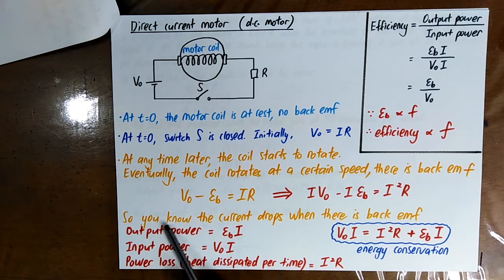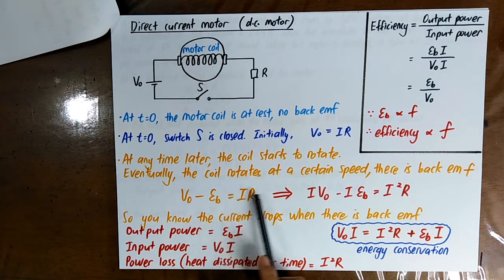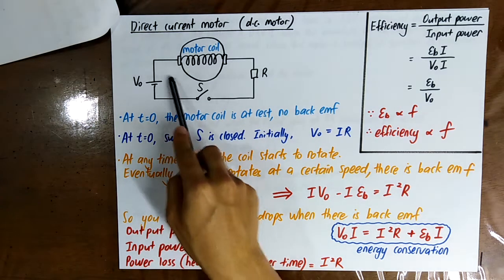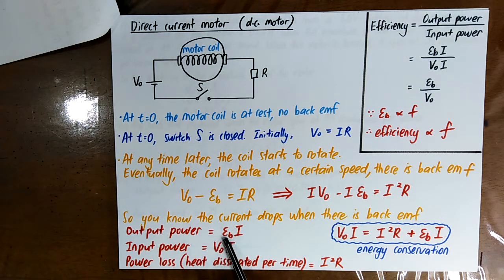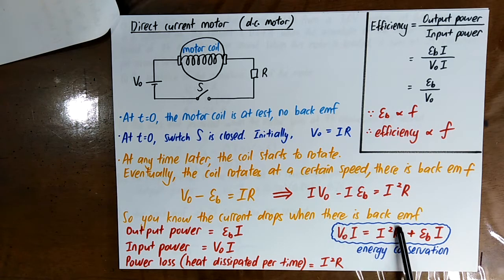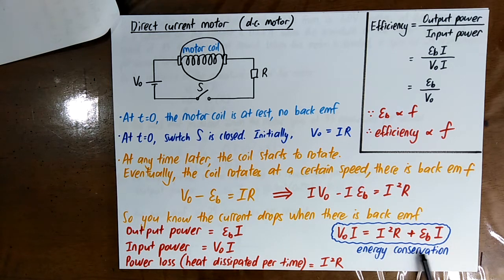When you multiply the equation by I: V₀I is the input power given by the battery; EB·I is the output power; and I²R is the power loss — the heat dissipated by the resistance per unit time. So input power equals heat dissipated plus output power. This is energy conservation.